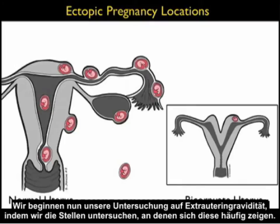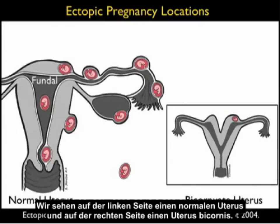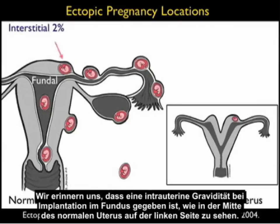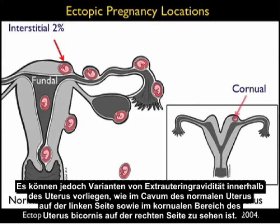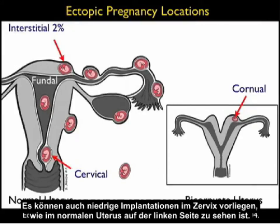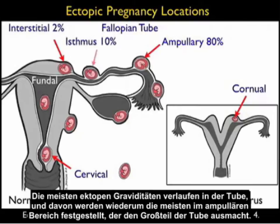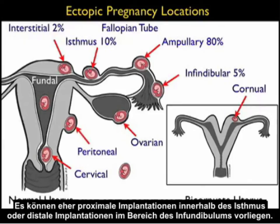Let's review the locations where ectopic pregnancies are commonly found. A fundal location defines an intrauterine pregnancy in a normal uterus. However, variants of ectopic pregnancies can occur within the uterus at the interstitial location or in the cornual region of a bicornuate uterus. Implantations can also occur low within the cervical region. Most ectopic pregnancies are located within the fallopian tube, and of those, the majority will be found in the ampullary region, though implantations can also occur in the isthmal or infundibular regions.